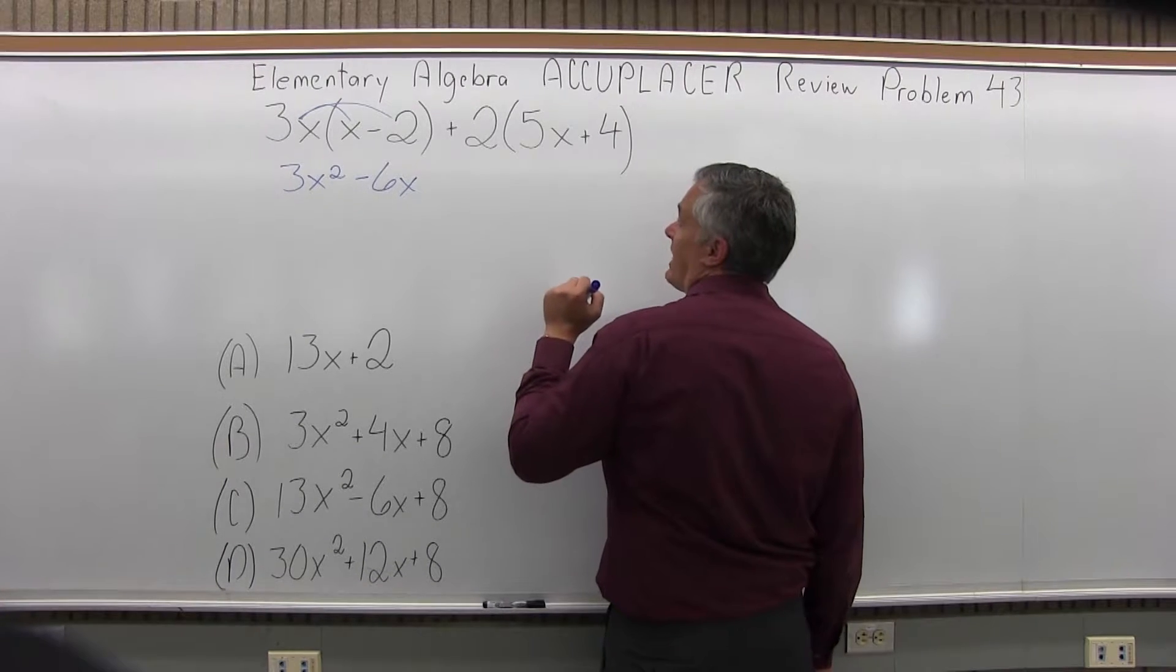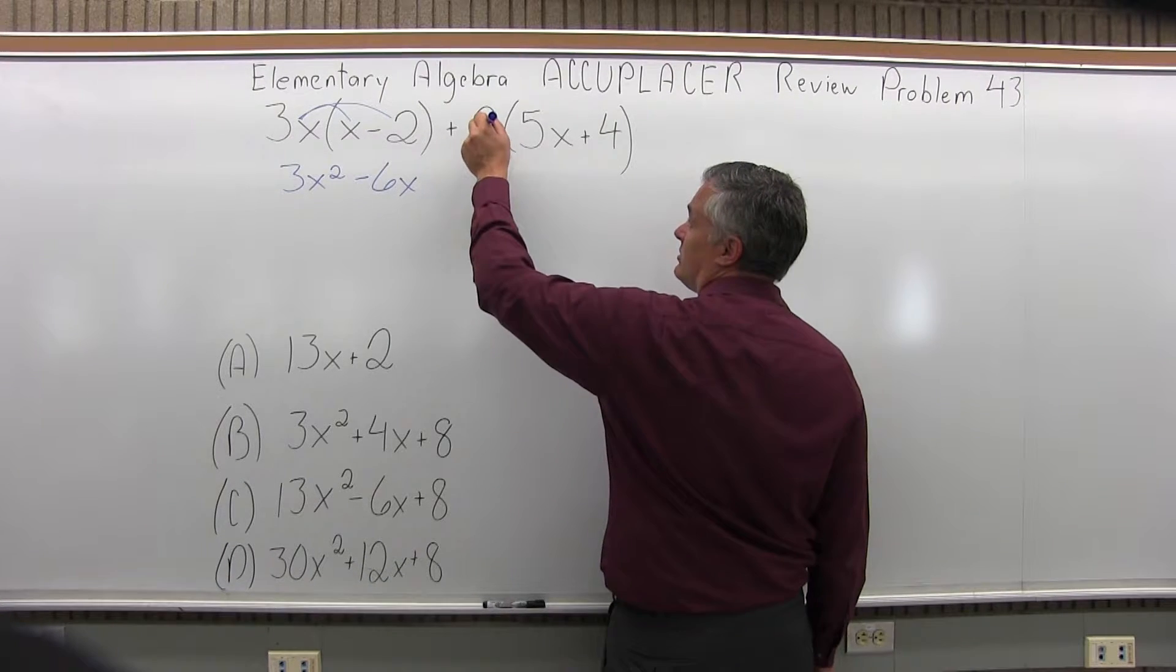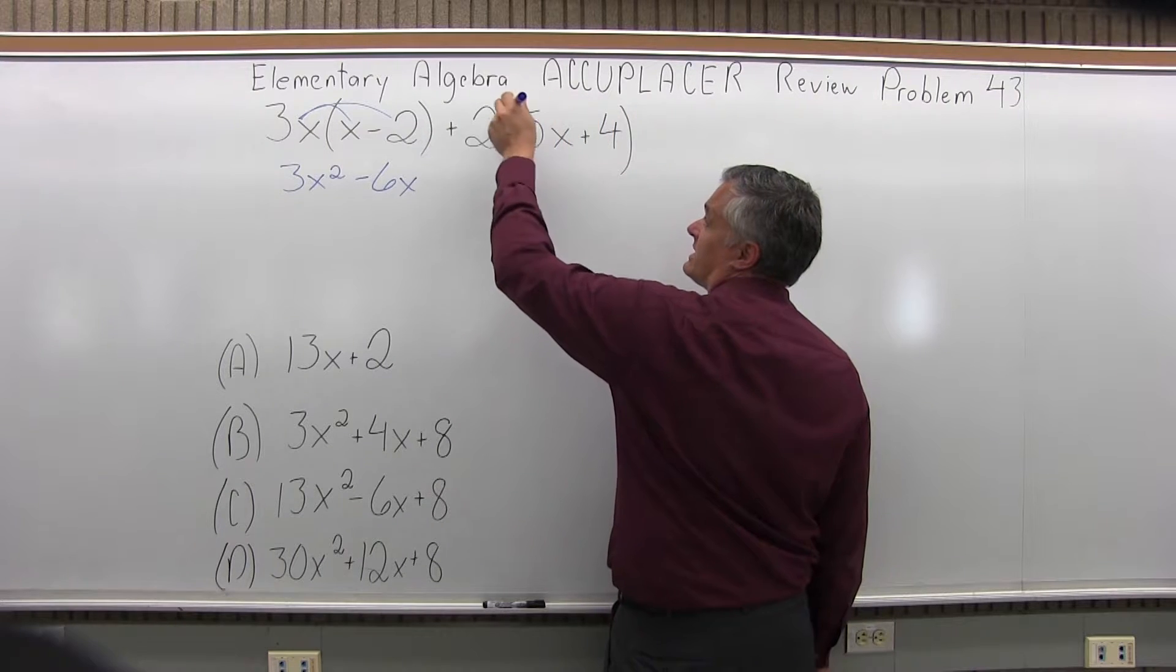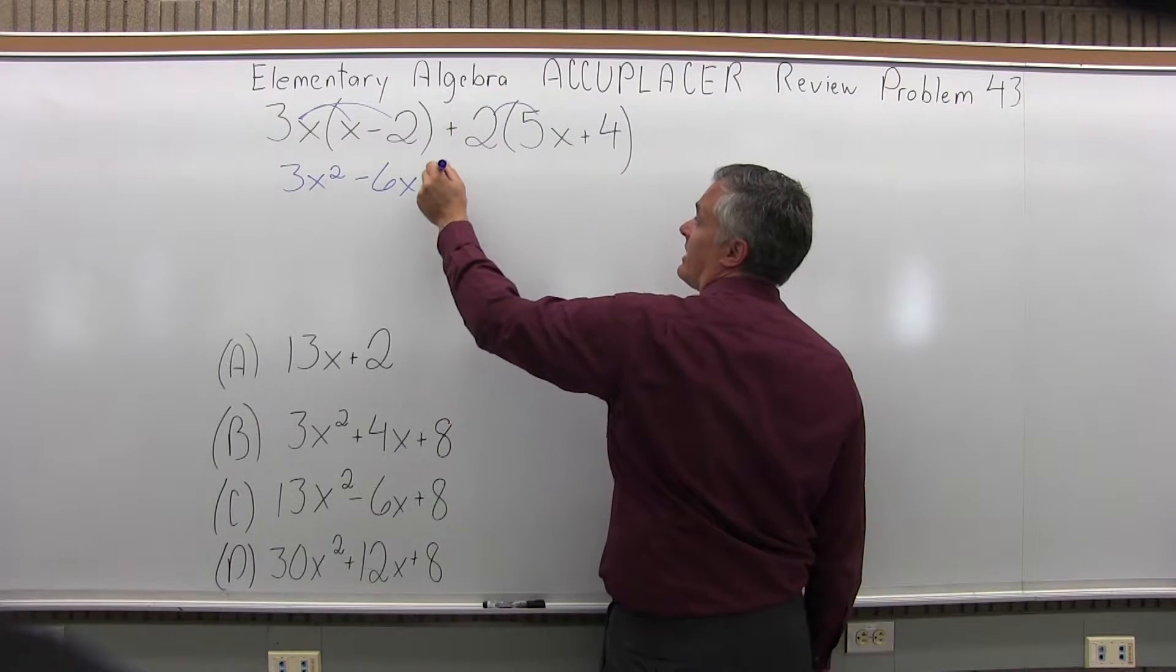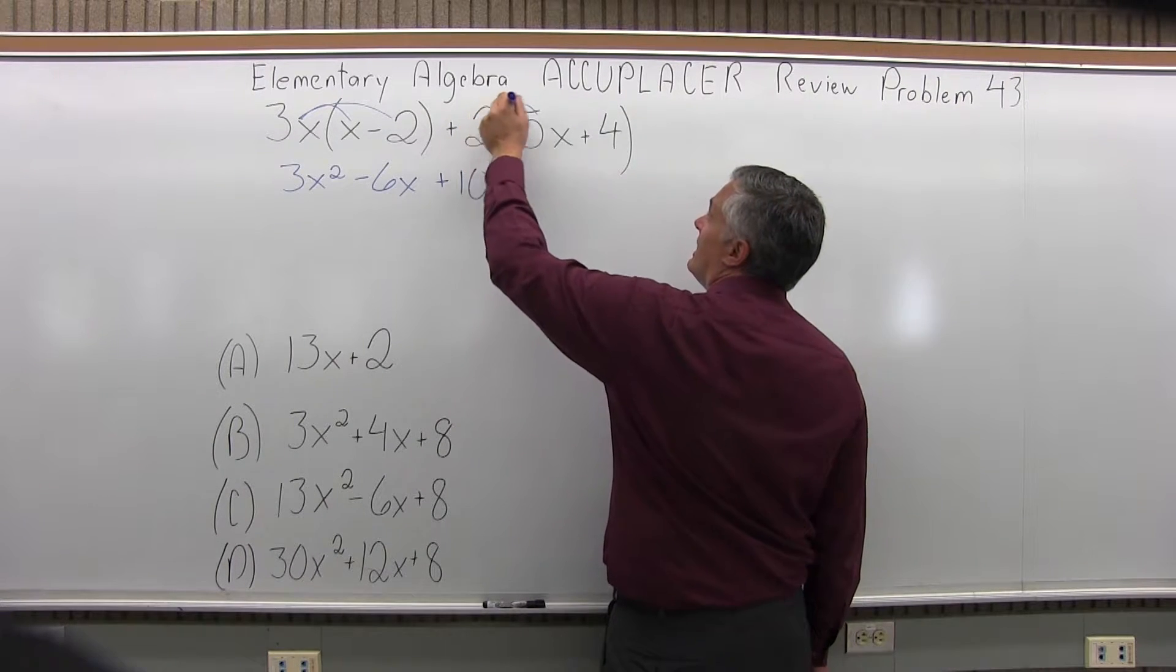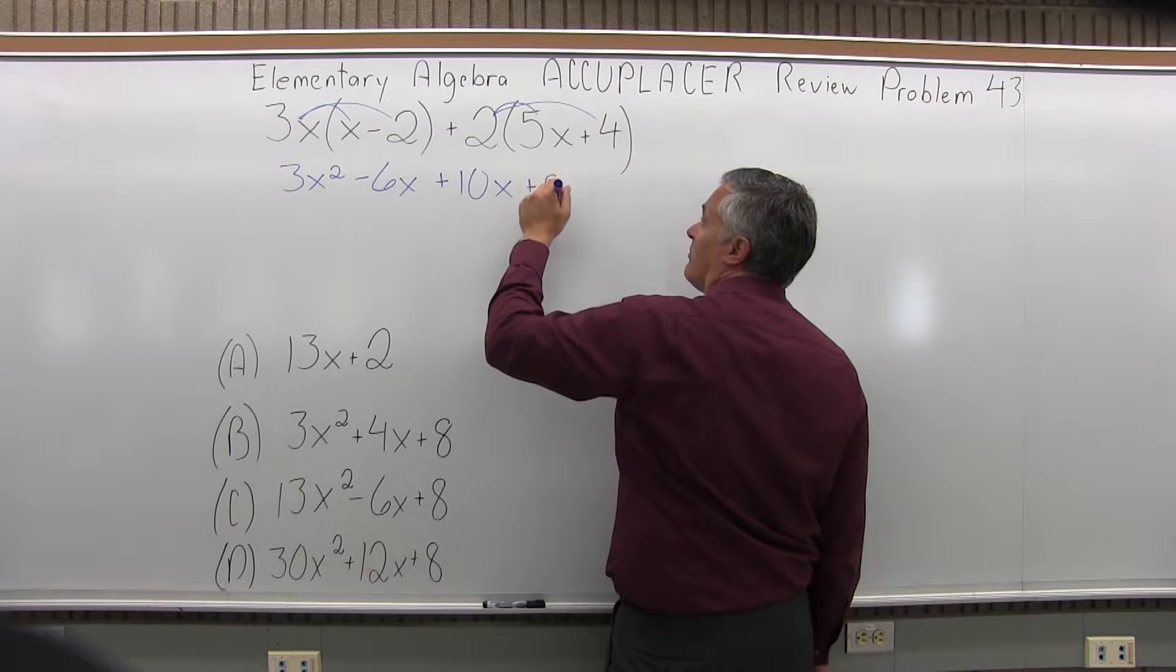Now for the other one, 2 times 5x plus 4, I'm going to multiply the 2 in front of the parentheses times the 5x and times the 4 that's inside the parentheses. So 2 times 5x will be 10x, it's positive 10x. And then 2 times 4 will be 8, again positive 8.